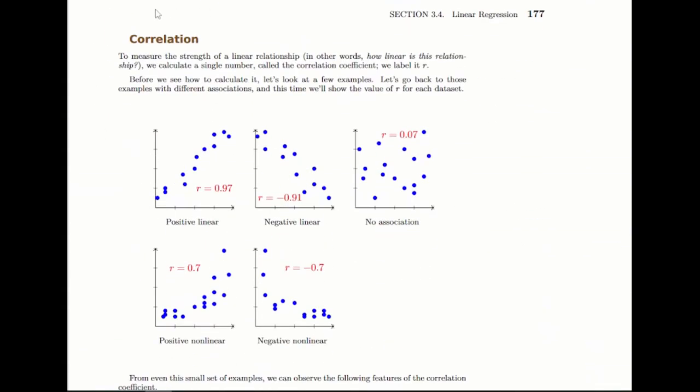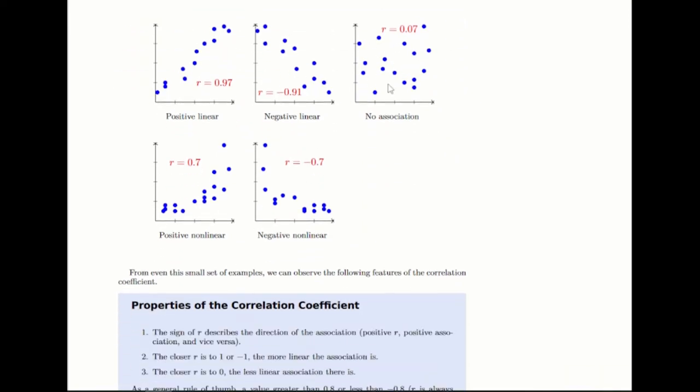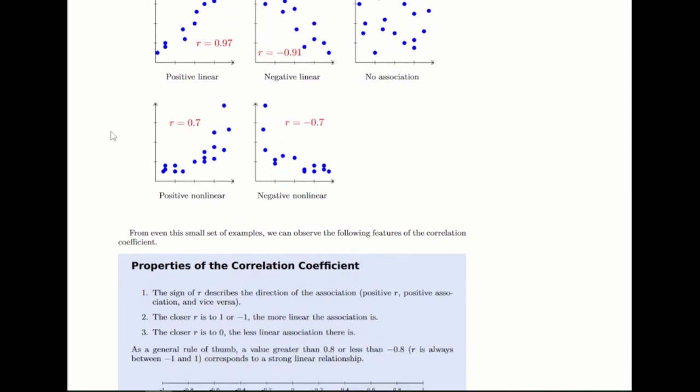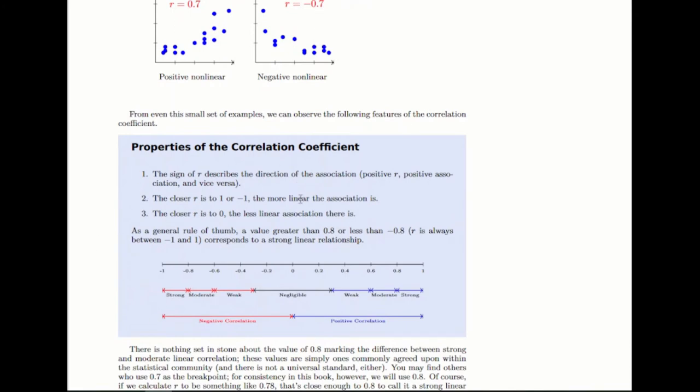So correlation, again, there's going to be this measure, this correlation coefficient that we call R. And that will describe for us how strong the linear relationship is. There's a few examples here, the same examples I had earlier, with their R values that are matching. And from those examples, there are some properties you can read about here. Basically, the closer R is to one or negative one, the stronger the linear relationship is. If it's positive, it's an upward positive linear relationship.